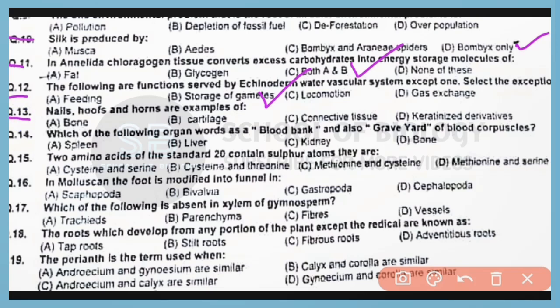Question number 13. Nails, hoofs, and horns are examples of keratinized derivative tissues or parts. Correct answer is option D.